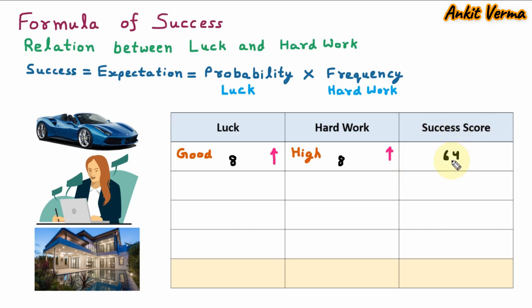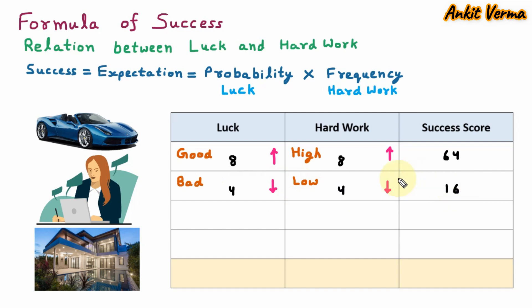In Case 2, luck is bad — represented with a downside arrow — and the score out of 10 is 4. The hard work is also low — represented with a downside arrow — and the score is 4. So 4 into 4 is 16. If our luck is good and we are doing high hard work, our success score is 64, which is very high. If our luck is bad and hard work is low, our score is 16, which is very low.